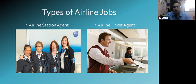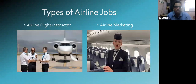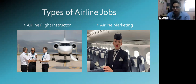Airline station agents make sure everything at the ground level is going perfectly and they communicate with airplane crew to ensure everything runs smoothly. Airline ticketing agents are the people you contact for any doubts regarding tickets or to book a ticket — they act as intermediaries between the customer and the airline. The airline flight instructor is the lead person whom pilots and co-pilots consult. Airline marketing agents make sure the company's marketing and sales are up to standard and attract customers.